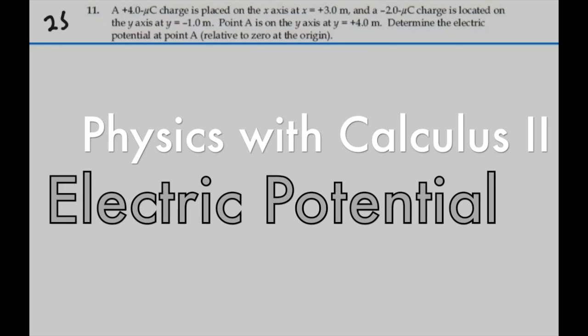Here's problem 2511. A 4 micro coulomb charge is placed on the x axis at x equal plus 3, and a minus 2 micro coulomb charge is located on the y axis at y equal minus 1 meters. Point A is on the y axis at y equal 4. Determine the electric potential at point A relative to zero at the origin.